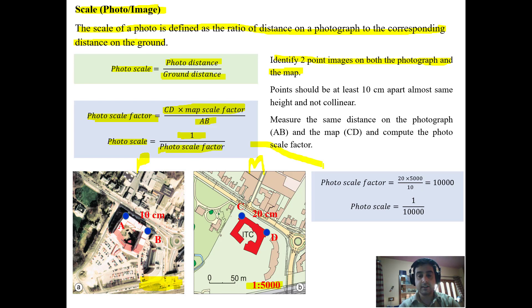To understand it further, photo scale factor equals CD, the distance between two points C and D on the map which is 20 centimeters, and map scale factor is 5000 (1 is to 5000), divided by AB which is the distance on the photo between the two points, that is 10 centimeters. So it comes out to be 10,000.